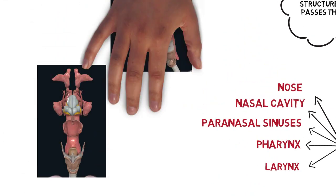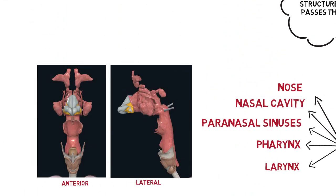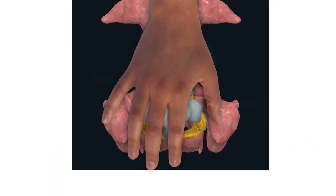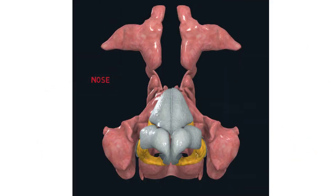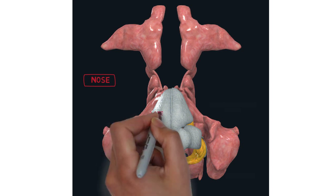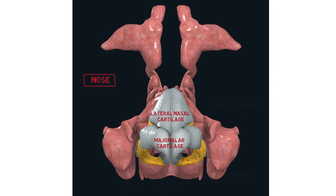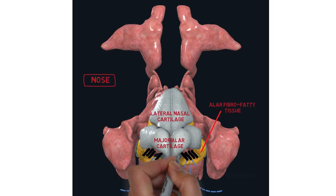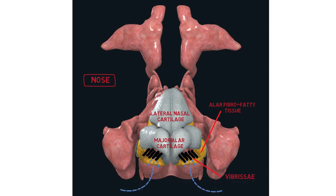These are the close-up view of our upper airway. When air comes into our system, it will first encounter our nose. Our nose is made up of cartilages and fibrofatty tissue. We have a pair of lateral nasal cartilage and major alar cartilage, which make up the hard part of our nose and fibrofatty tissue for the softer part. The incoming air will enter our nose through the nasal vestibule.